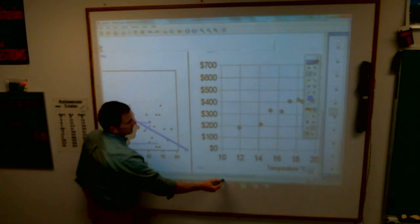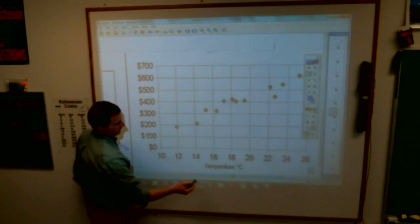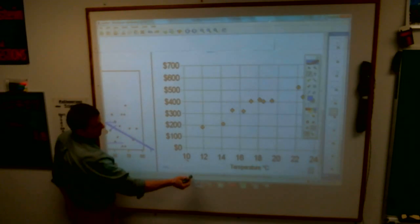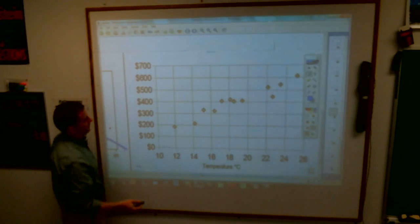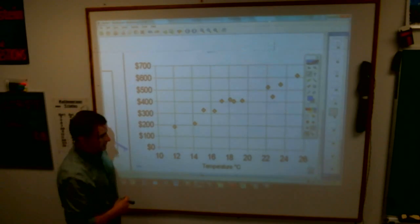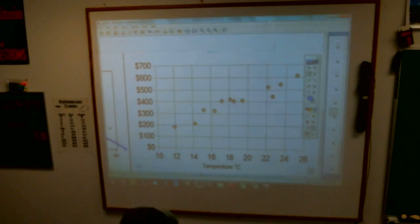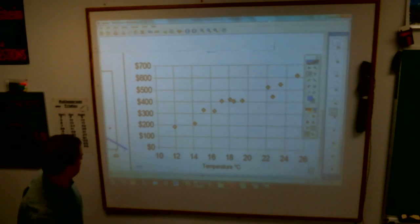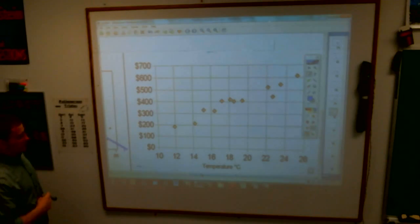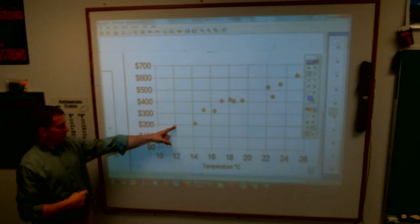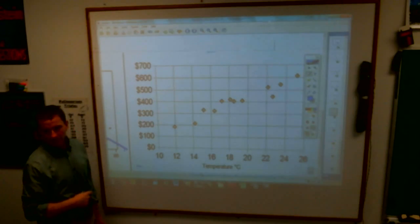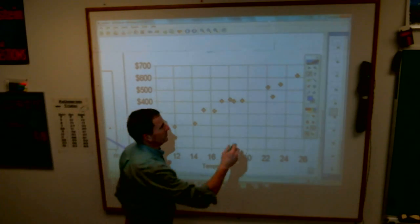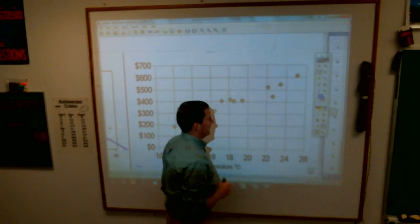How about the next one? If you were drawing a line of best fit there, by the way, what are we comparing here? Temperature. Temperature and money? That's the money to cool the building. How about money to cool the building? Because heat would go the other way around.